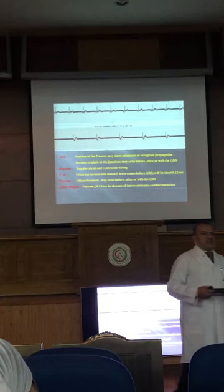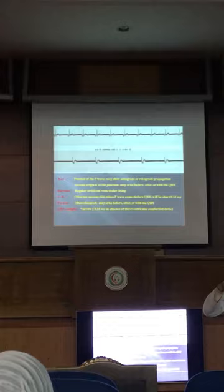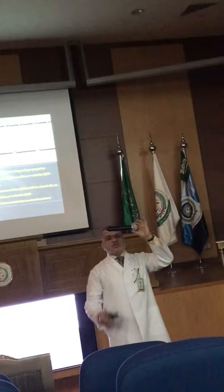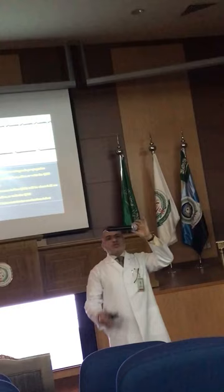P has three situations in junctional rhythm. The P wave has to be negative because that is the direction of depolarization against the direction of the normal current. But it could be negative before, or negative after, or negative behind the QRS.